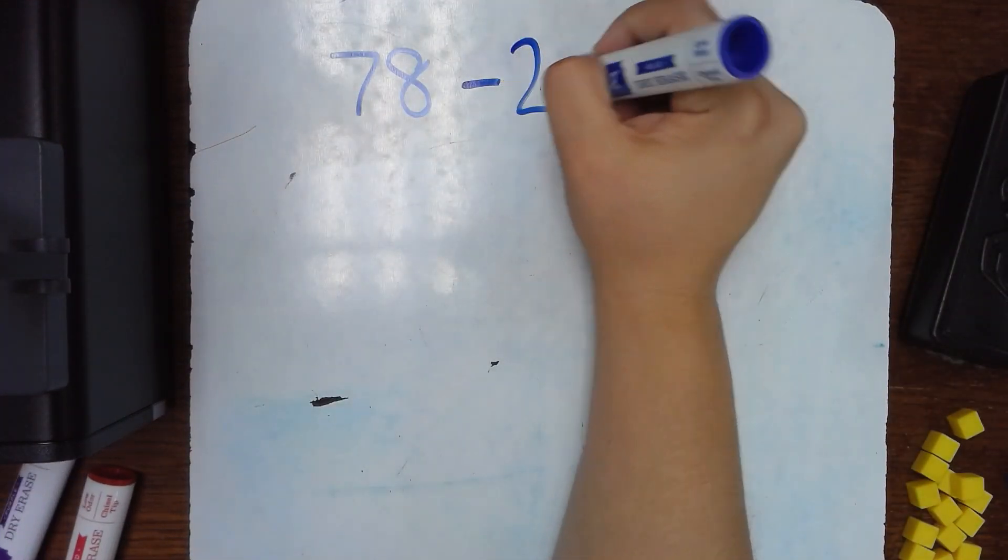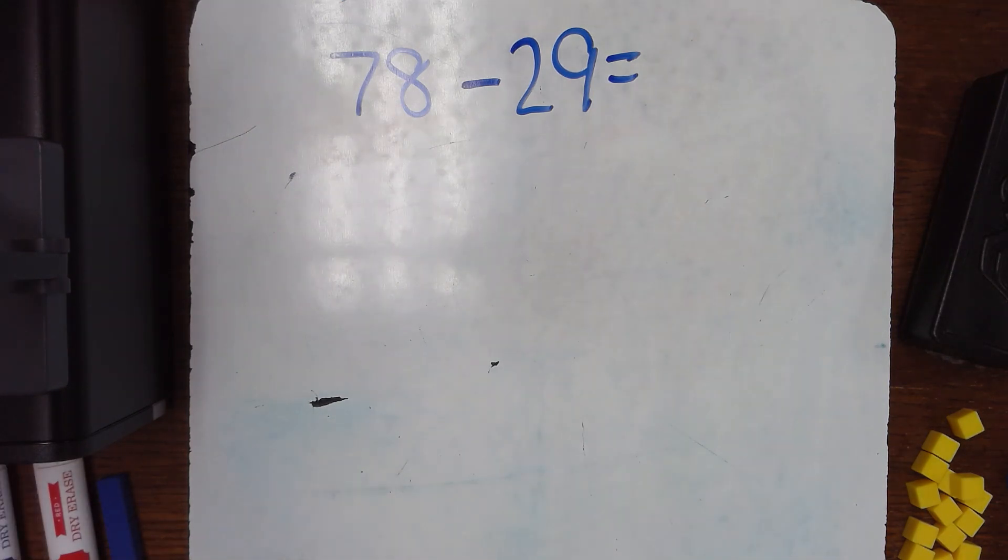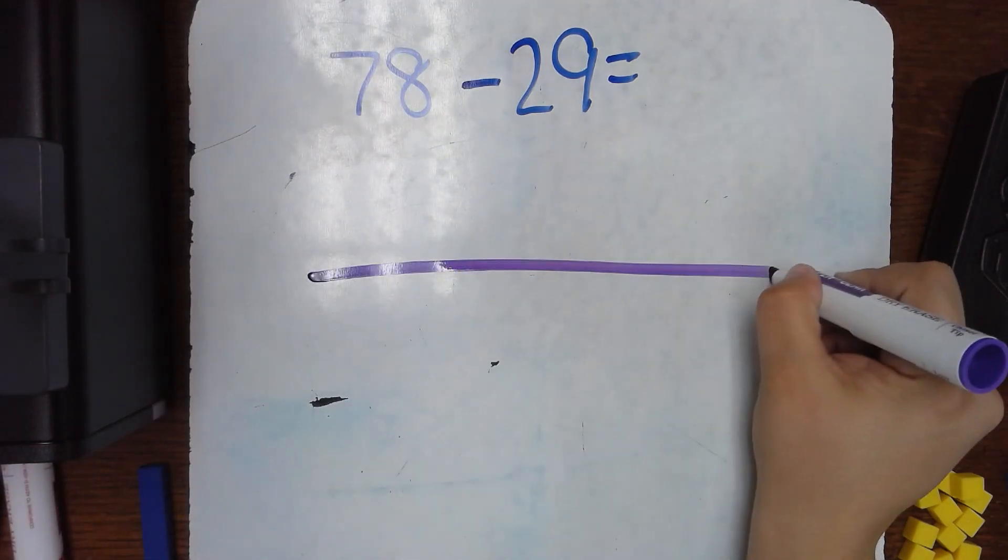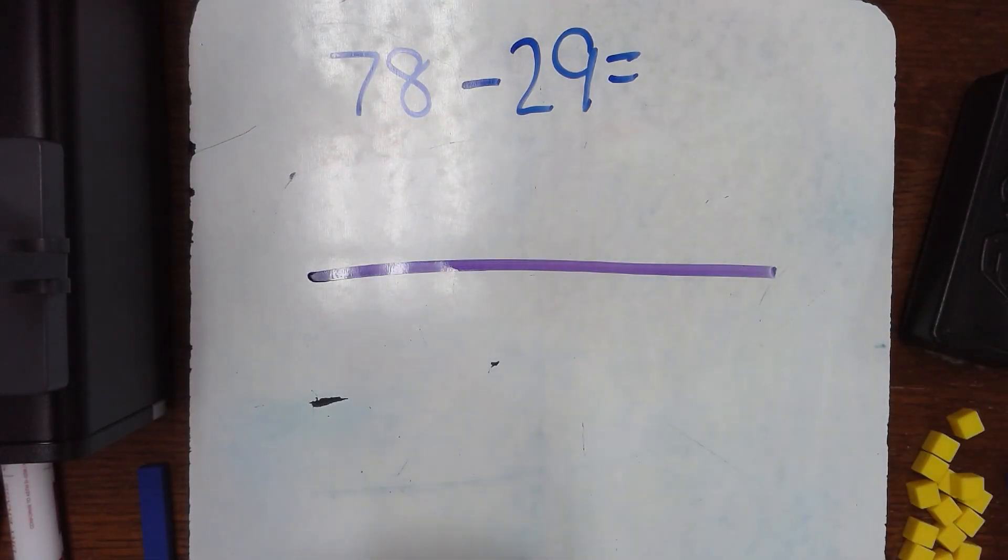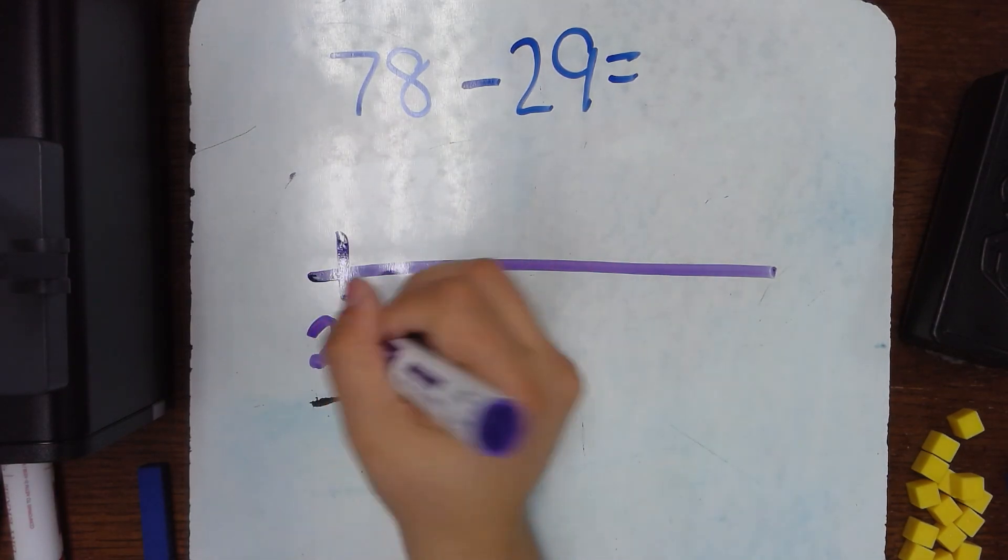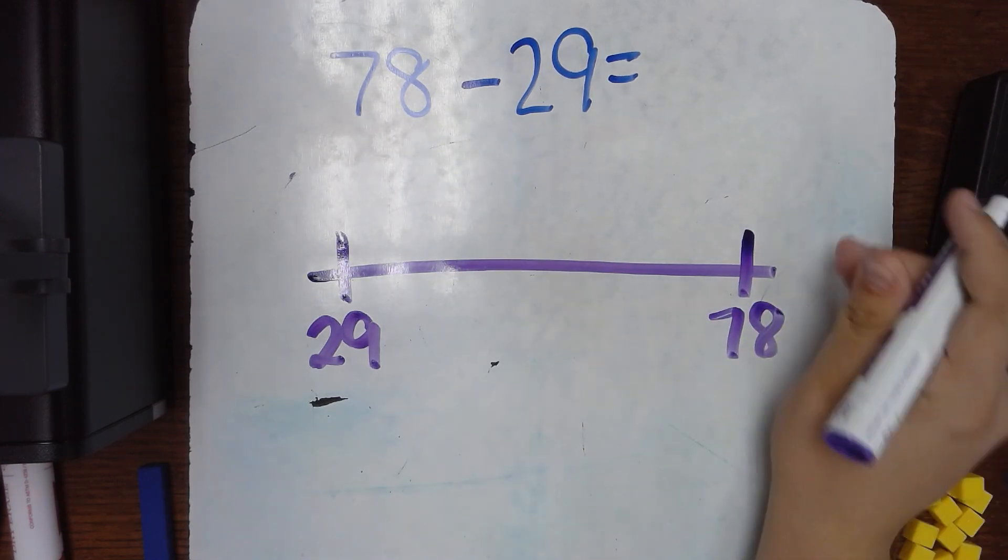Another way that our kids are potentially doing this problem is by using a number line, because subtraction on a number line, subtraction is just the distance between numbers. So on a number line you have two options. No matter which option you do, you will start with putting 29 on the number line at the bottom and you'll put 78 on the other side. Okay.